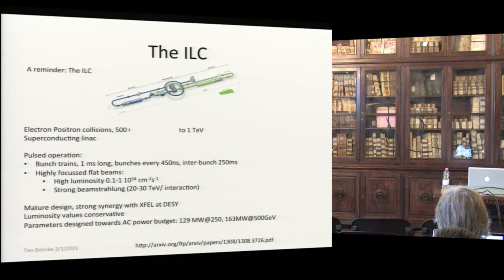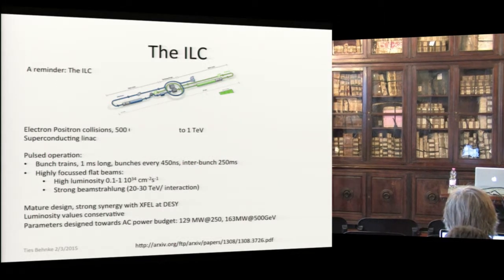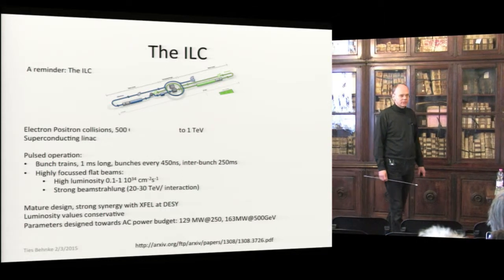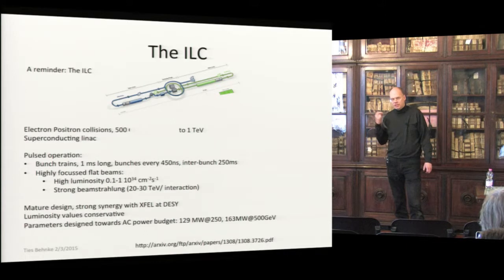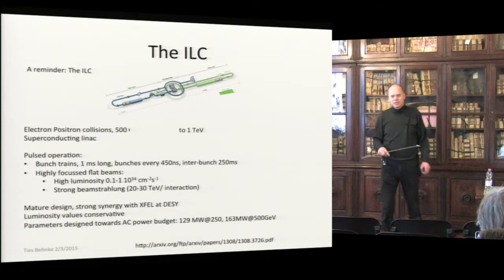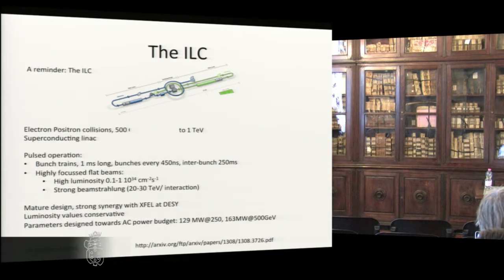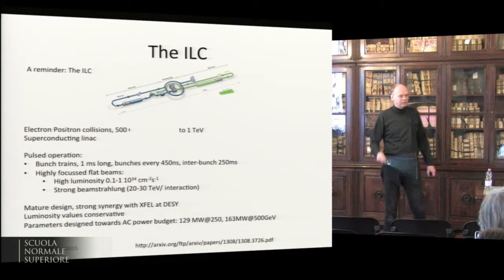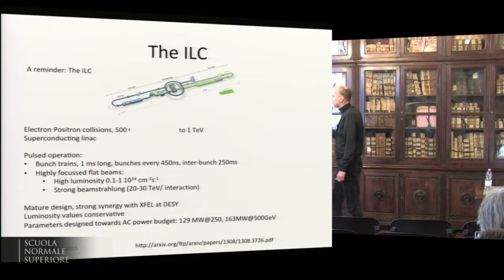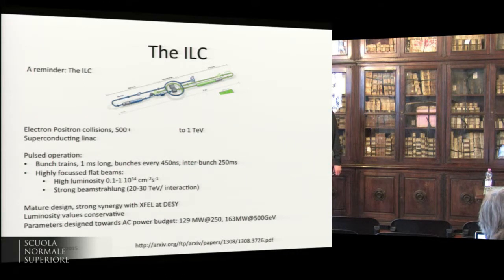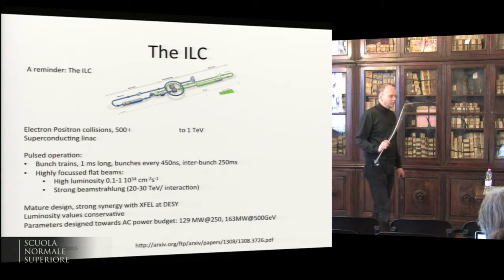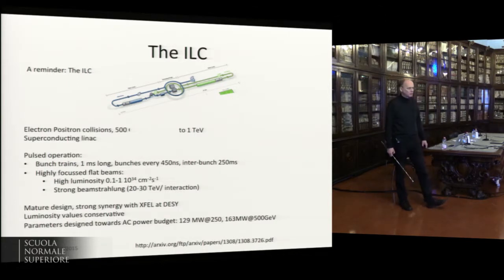The ILC is based on superconducting technology, which implies pulsed operation — a particular time structure with bunches following reasonably close to each other in a train, with long pauses in between. Bunches are spaced every few hundred nanoseconds, with a bunch train repetition frequency of 5 or 10 Hz. This has implications on how you handle events and power your detectors. Since it's a linear collider, you cannot reuse your beams and must push on beam parameters to obtain the desired luminosity.